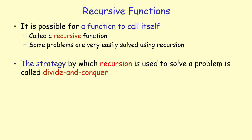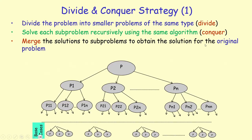The strategy by which recursion is used to solve a problem is called divide and conquer. Here is the general idea: you have a problem P which is very big to solve. So what we do is we divide the problem into subproblems called P1, P2, ..., Pn. You have to have at least two such subproblems.